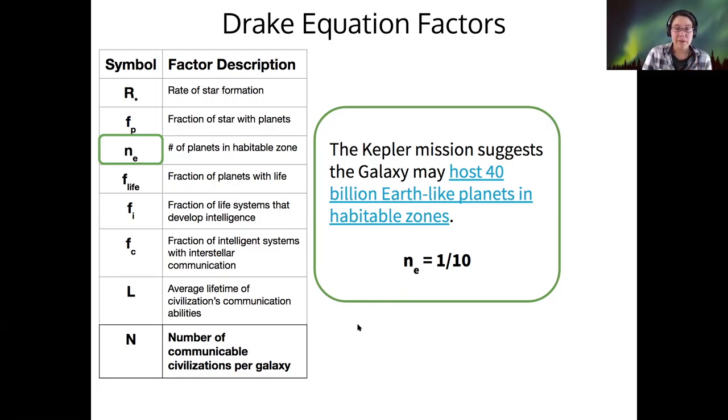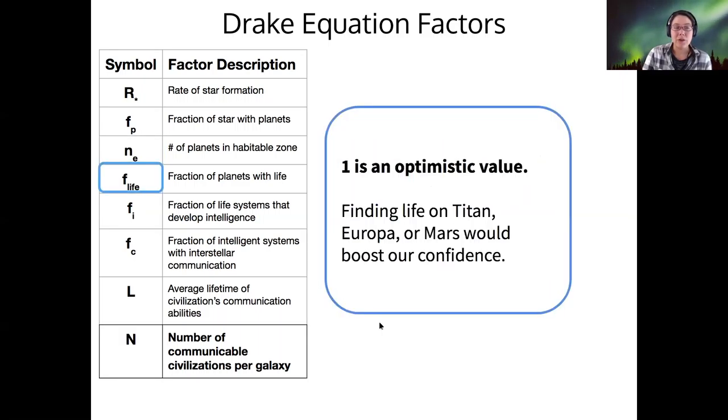So after we have a habitable planet, we need to know, does life develop there? And one is an optimistic value. We right now only have n equals one database to support this claim, right? But finding life elsewhere in the solar system would boost our confidence. But we think that life is fairly likely because looking at when it developed on Earth, it seems like it developed as soon as it possibly could after the heavy bombardment period in our early solar system ended.